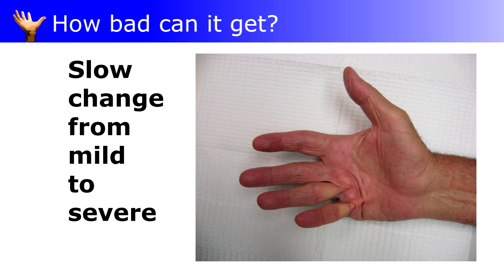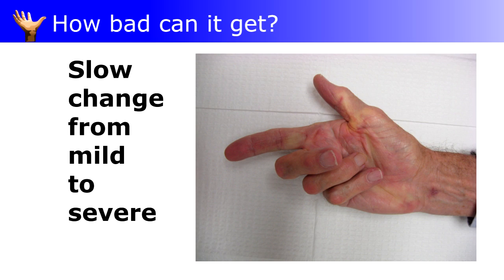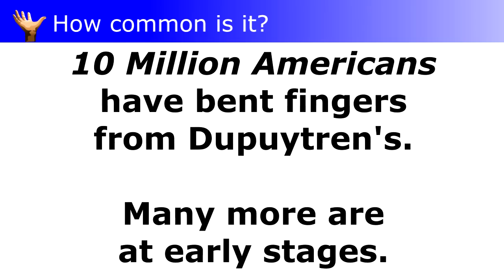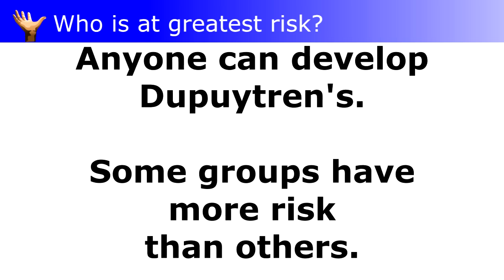How bad can it get? For most, it's a mild problem, but some people's fingers get so bent it's crippling. I've never seen it. How common is it? At least 10 million Americans have bent fingers from Dupuytren's. Anyone can get it, but it's more common in some groups.